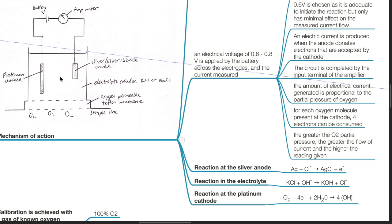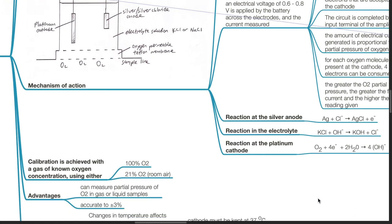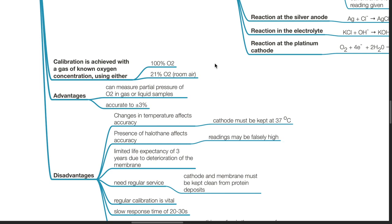The greater the oxygen partial pressure, the greater the flow of current and the greater the reading given. Reaction at the silver anode: Ag plus Cl- becomes AgCl plus electron. Reaction at the electrolyte: KCl plus OH- becomes KOH plus Cl-. Reaction at the platinum cathode: O2 plus 4 electrons plus 2H2O becomes 4OH-. Calibration is achieved with a gas of known oxygen concentration using either 100% oxygen or 21% oxygen, also known as room air.